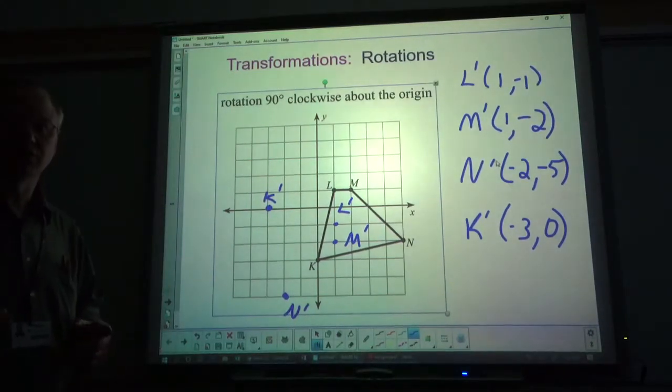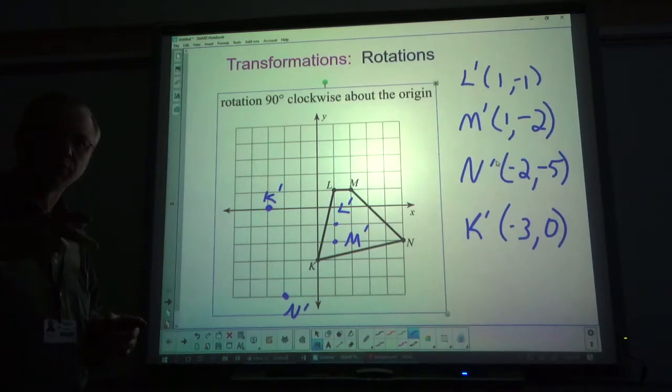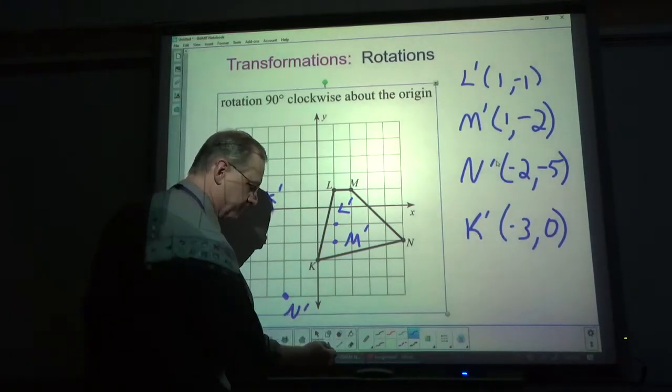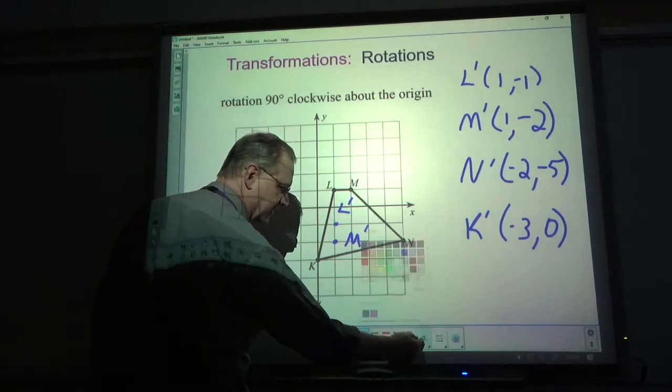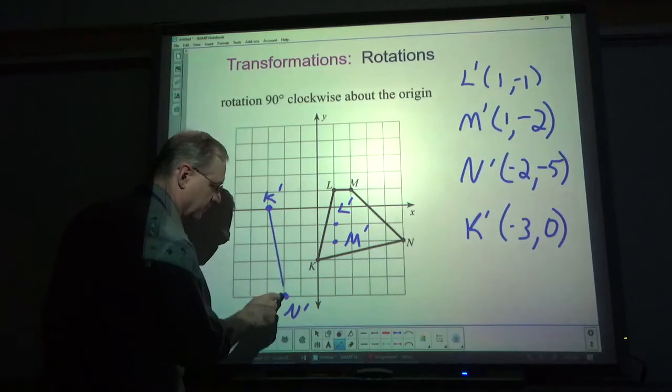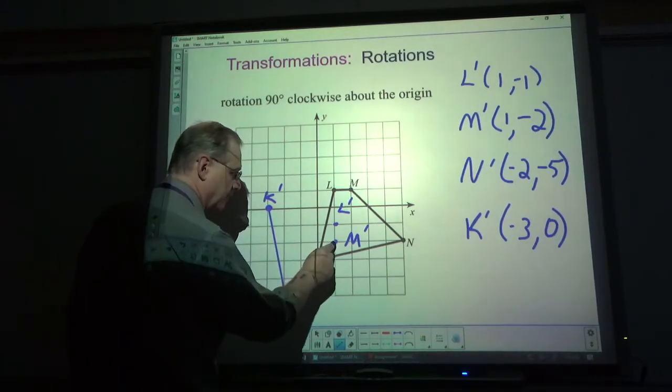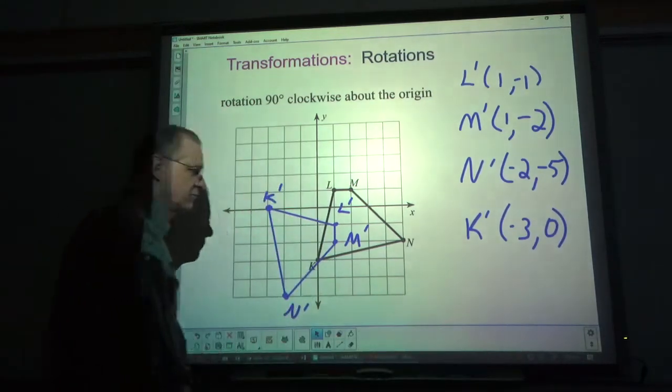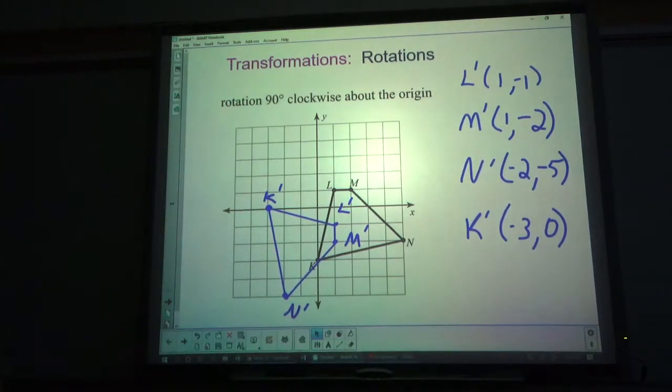Now when you do this on your own, you can turn, figure out where a point is, turn it back, and plot that point. Because you're going to have a physical piece of paper. I'm going to connect these dots up. And here we go. And there is our answer. And we know it's correct. So that is how you do rotations. There's a clockwise rotation.